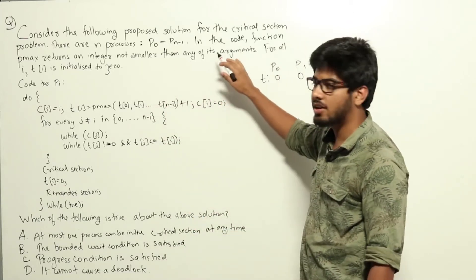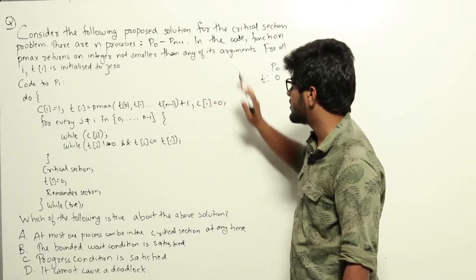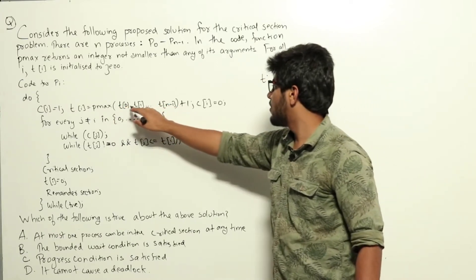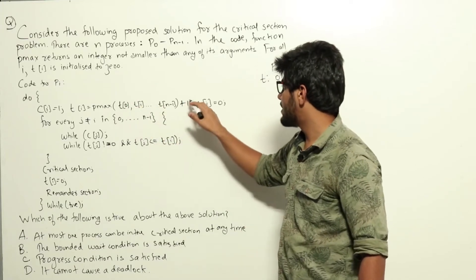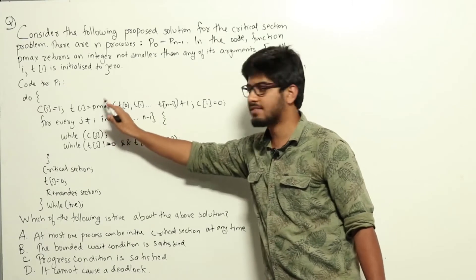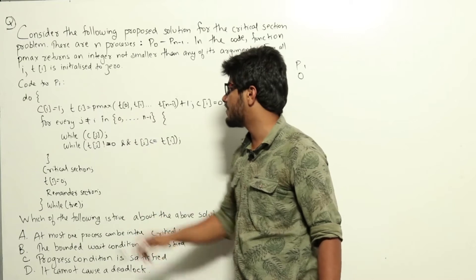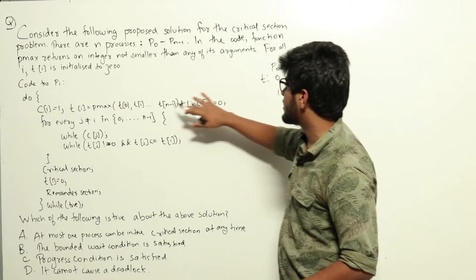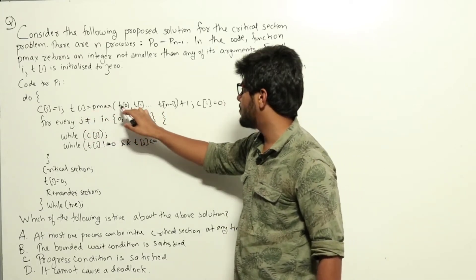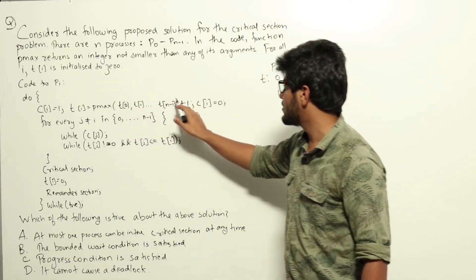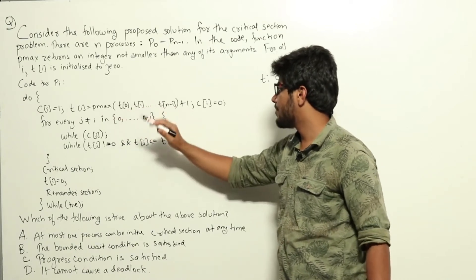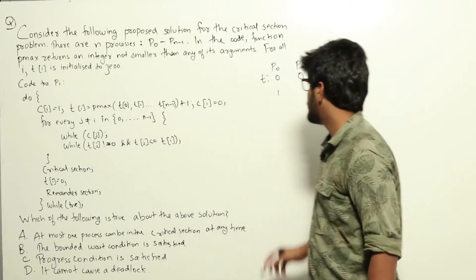We can choose any function satisfying this condition - one such function returns the maximum of t0, t1, up to t(n-1). Since all values are 0 initially, pmax returns 0, and 0 plus 1 gives t[i] equal to 1. Now, before this assignment happens for p0, p1 also calls pmax simultaneously - there is no critical section protecting this part. At that time, t0 through t(n-1) are all still 0, so pmax returns 0 for p1 as well, making t[1] also equal to 1. So both p0 and p1 get t values of 1.